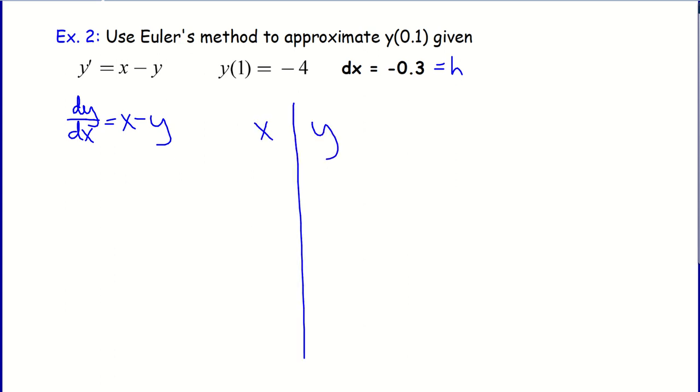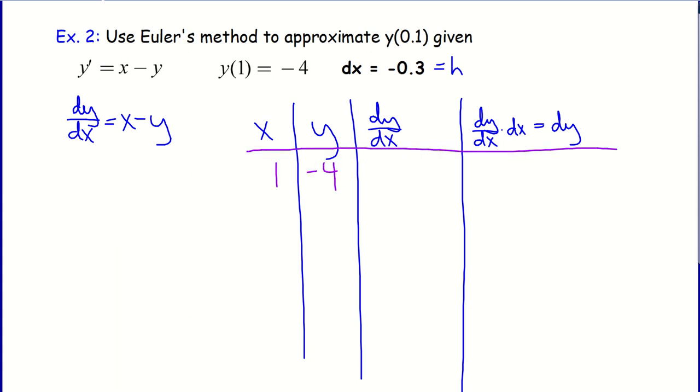I'm going to make my chart: x, y, dy/dx. You can write what that equals if you like. And then dy/dx times dx, the change in x, which is going to give us the change in y. I'm going to start at the point (1, -4). And the slope there would be x minus y. So 1 minus negative 4, which would be 5. And if I take that slope, because I'm moving leftward, I have the y value at x equals 1, and I'm trying to get the y value at x equals 0.1. So I'm moving to the left. That's what makes this change in x negative. So the change in x dx is negative 0.3. And then that would give me a change in y in this case of negative 1.5.